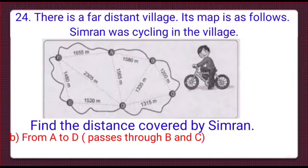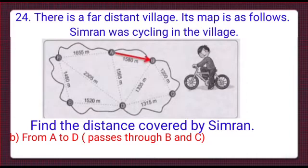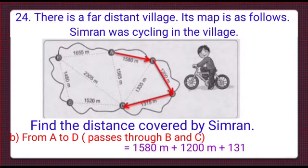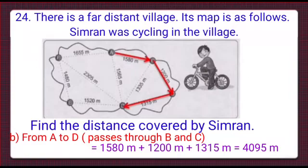In part B, we will find the distance from A to D while passing through B and C. Firstly, he will go from A to B — a distance of 1580 meters. Then he will move from B to C, which is 1200 meters, and after that from C to D, which is 1315 meters. The total distance is the sum of all three distances, which equals 4095 meters.